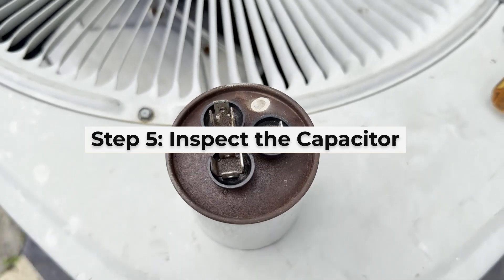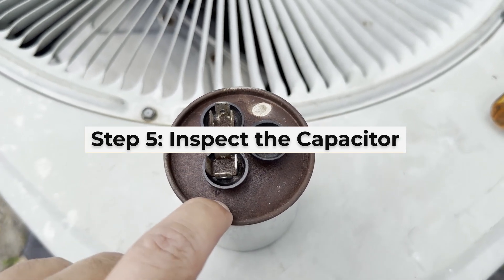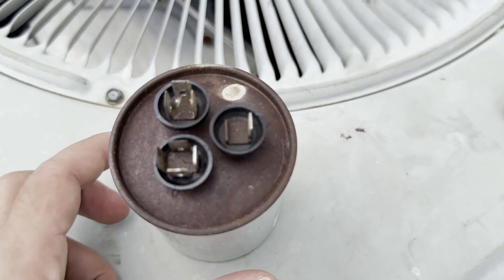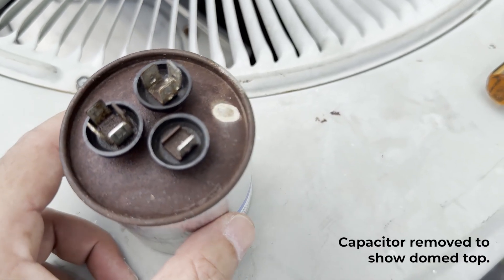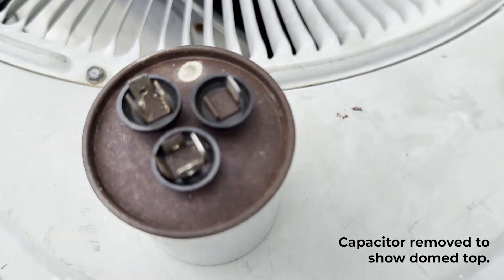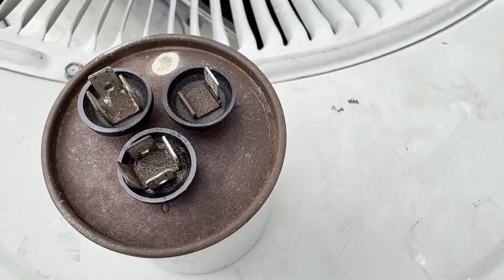Step 5: Inspect the capacitor. Look at the top. If it's bulging or mushroom shaped, it's bad. If it's leaking fluid, it's also bad. Even if it looks fine, testing is the only way to be sure. In our case, you can see it's domed and bubbled up. Still, we're going to test it to confirm.